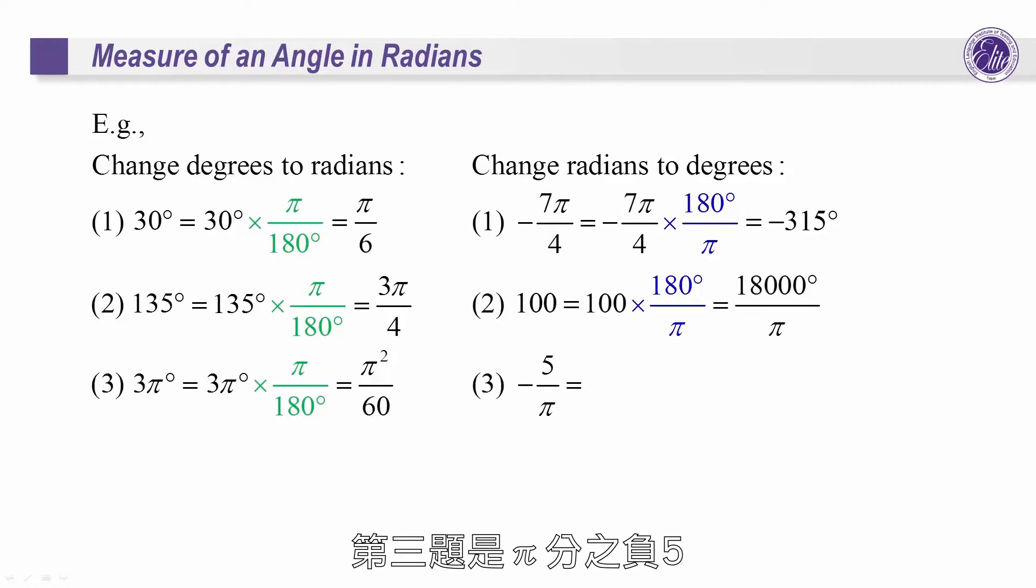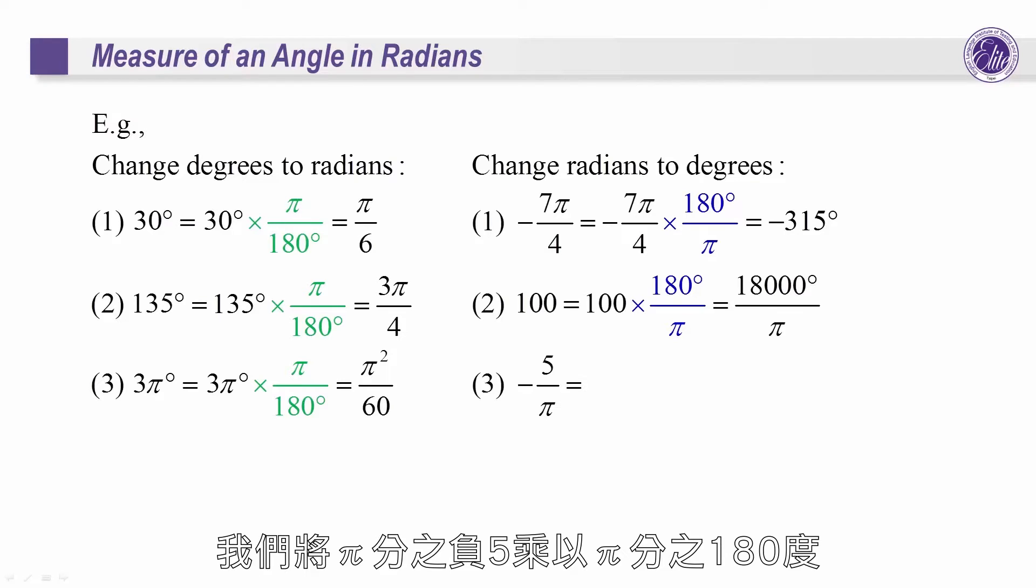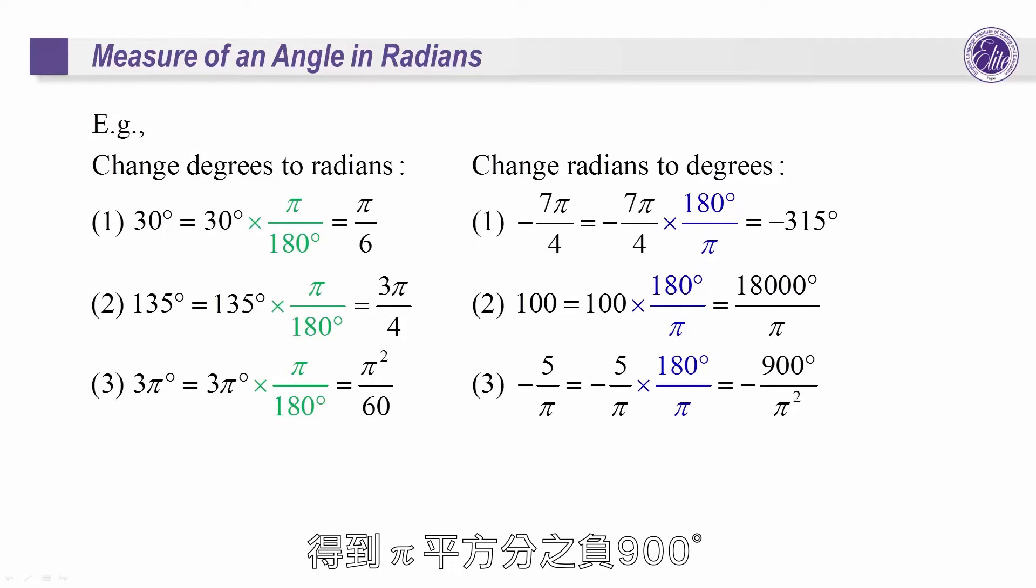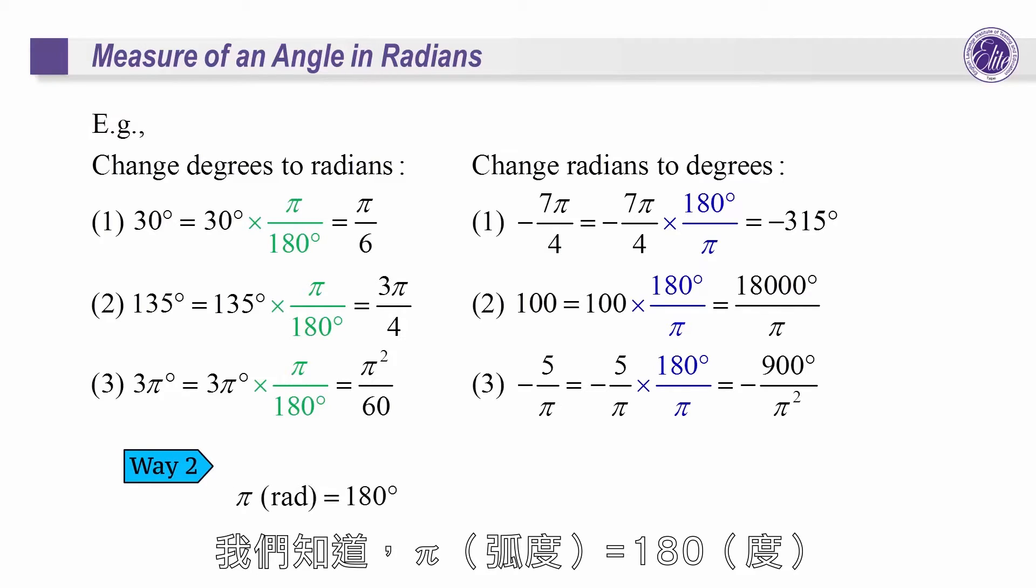The third example is minus 5 over pi. We use minus 5 over pi times 180 degrees over pi, which will give us minus 900 degrees over pi squared.